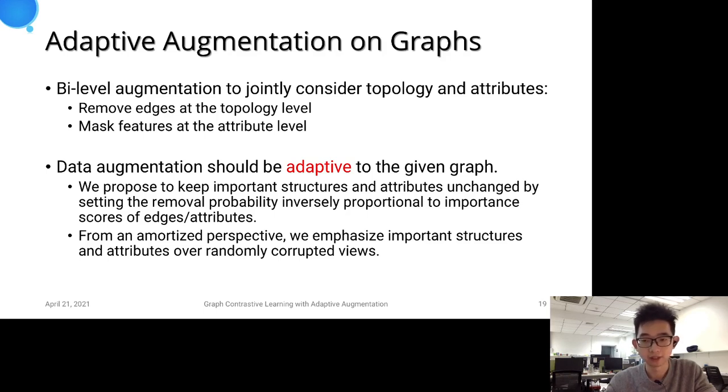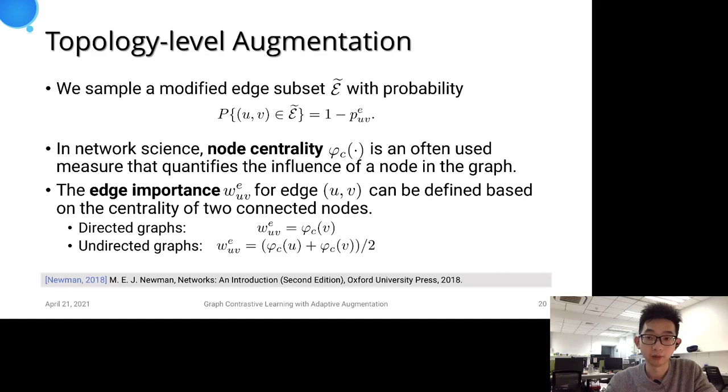At the topology level, we sample a modified edge subset with a certain probability. This probability should reflect the importance of that edge in the graph topology space.